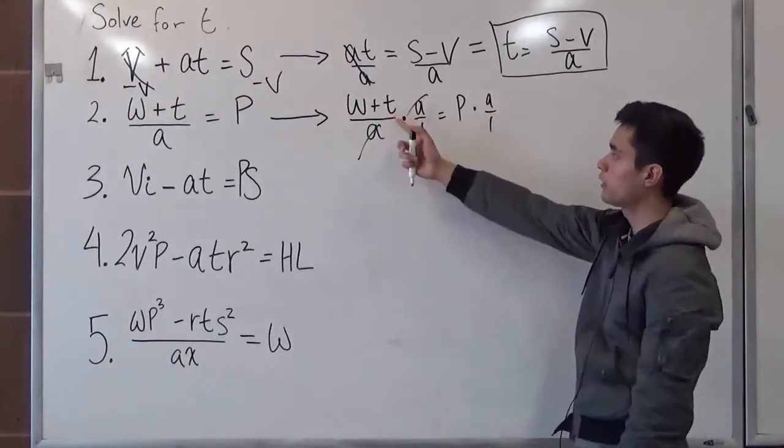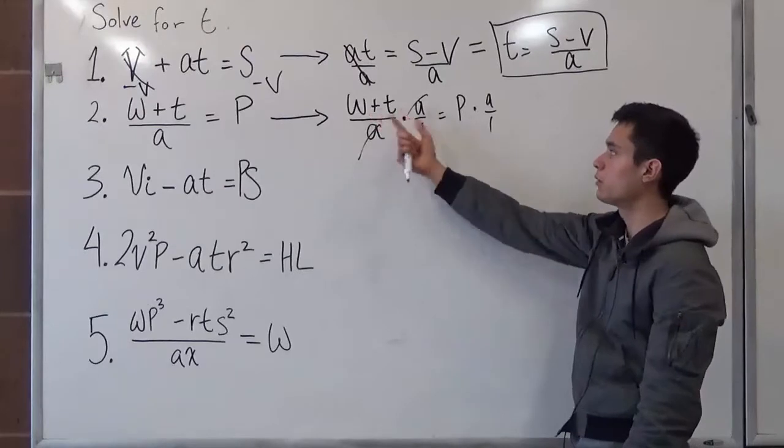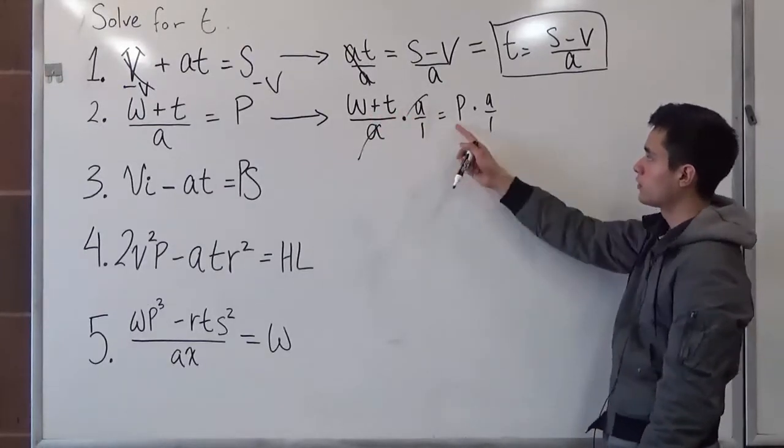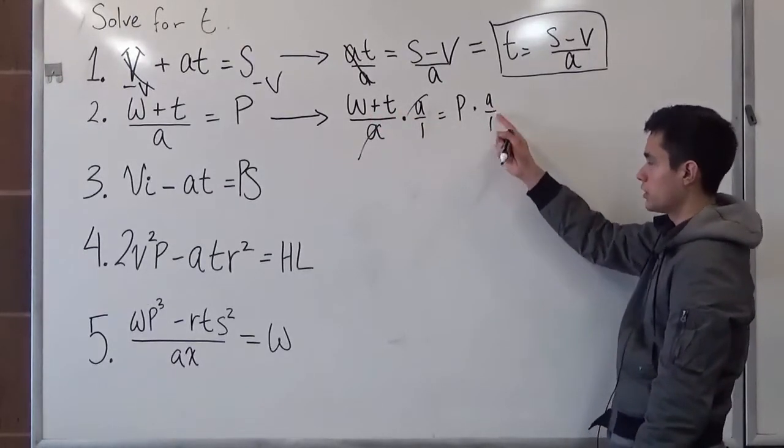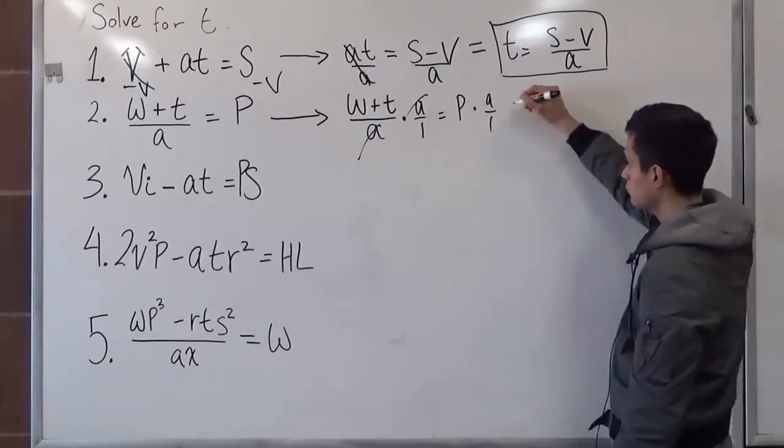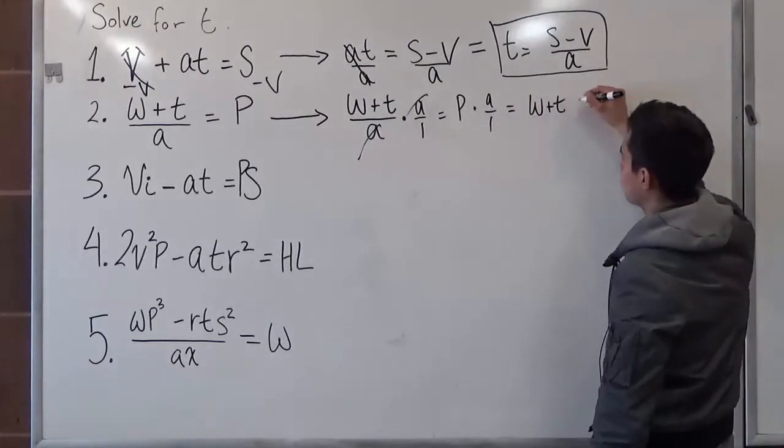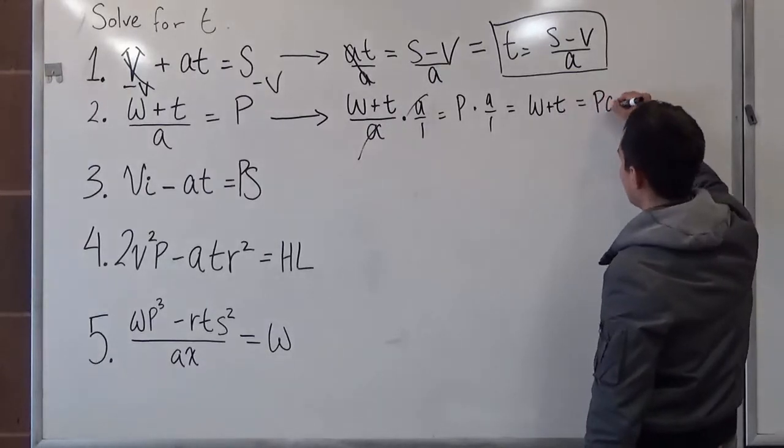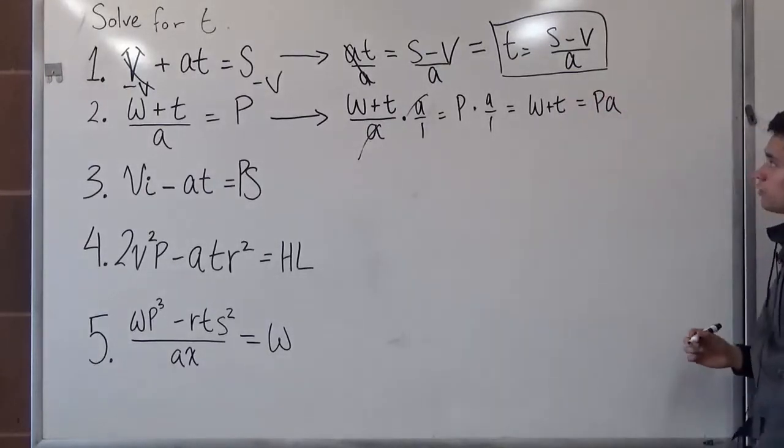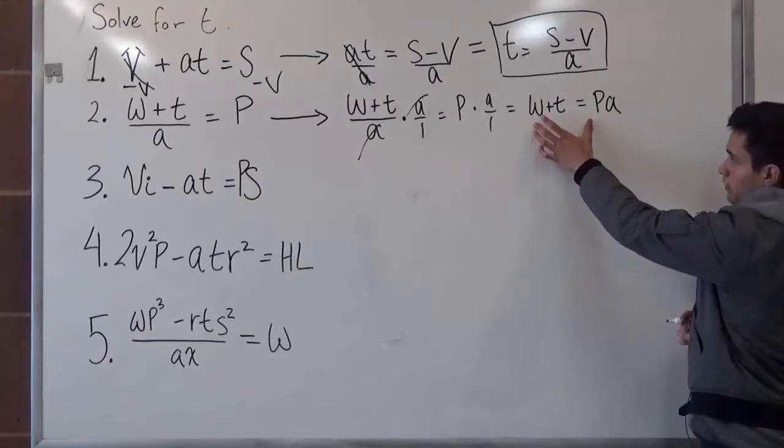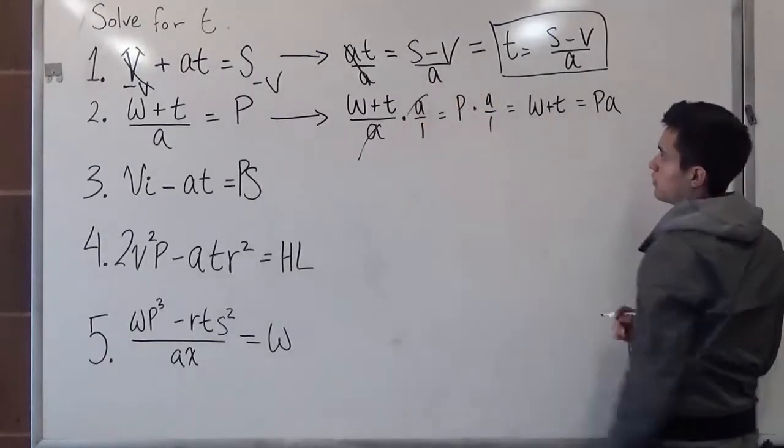And what you're left with is w plus t over 1, which is just w plus t, equals to p times a over 1, which is just a. So now this problem is starting to look like the problem we did originally.